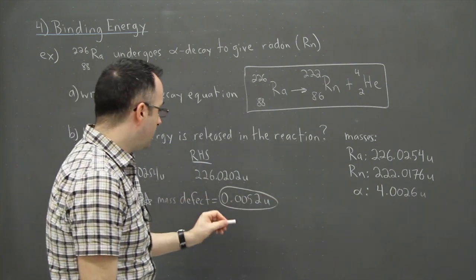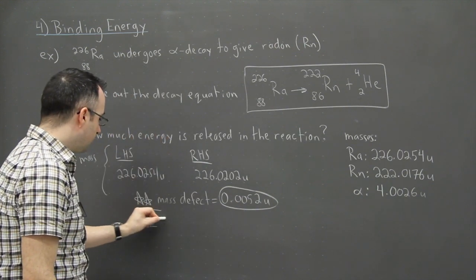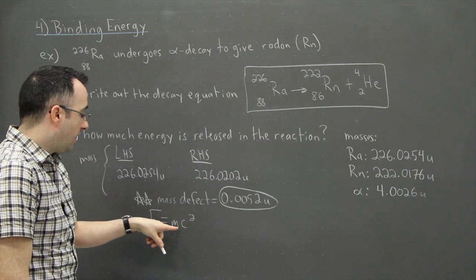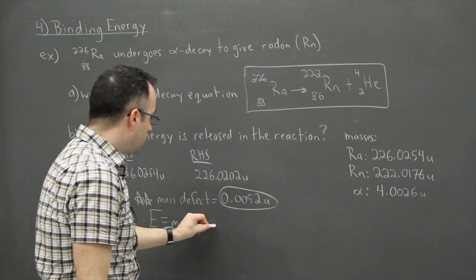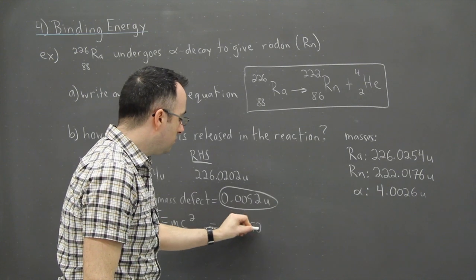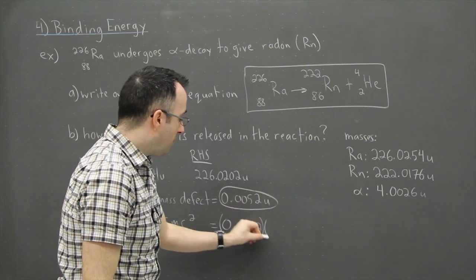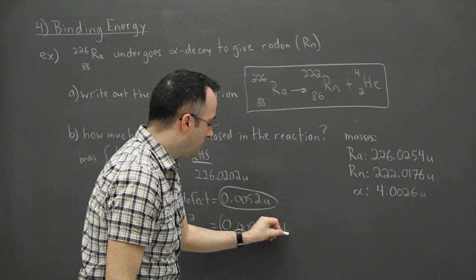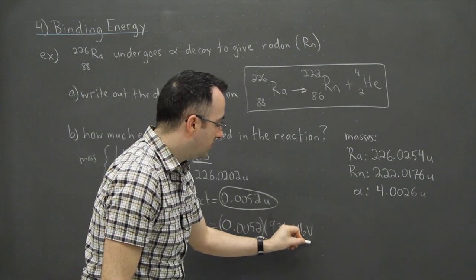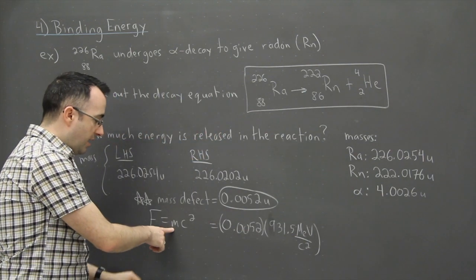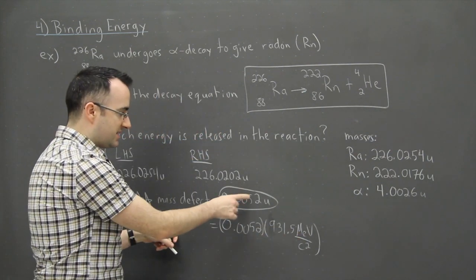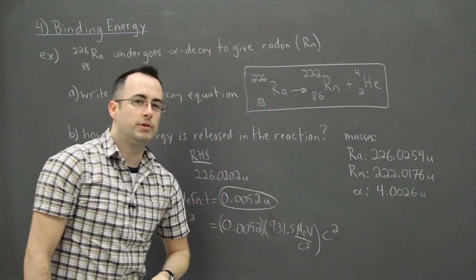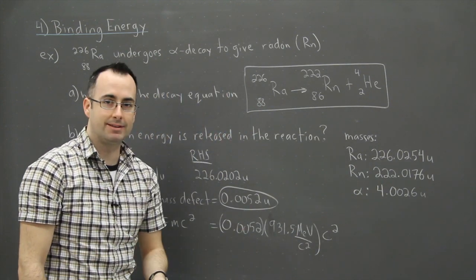So now we use this equation, E equals MC squared, because we want the energy that's released. So if I use that, then I just put in my mass. So I have 0.0052, and then what I do is I multiply that by U. And remember, 1U is the same thing as 931.5 MeV for every C squared. So I've just taken care of M. My M has two terms now, right? Because I have this times U, so this is what I've done, I've taken care of M, I still need C squared. You see something nice happening here, there's a reason why we use this.